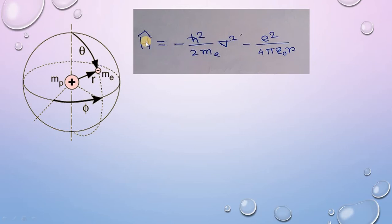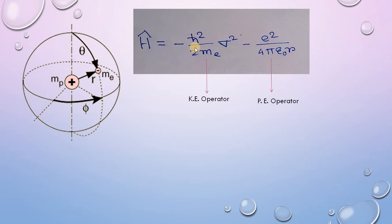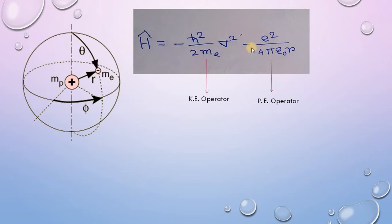This is the general expression for the Hamiltonian operator for the hydrogen atom model system. The first part is the kinetic energy operator: minus h-cross squared over 2Me, where Me is the mass of the electron and delta-squared is the Laplacian operator. The second part is the potential energy operator, which exists because of the attraction between the positively charged proton and the negatively charged electron. Since this interaction is attractive, there is a negative sign. This is the total Hamiltonian operator for the hydrogen atom.